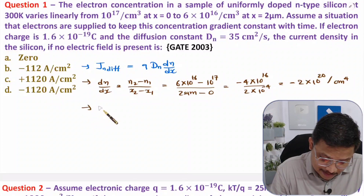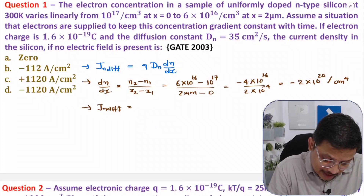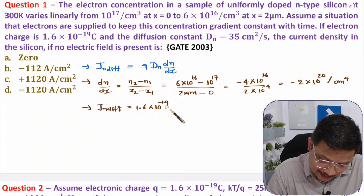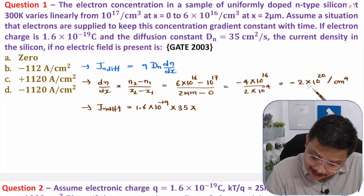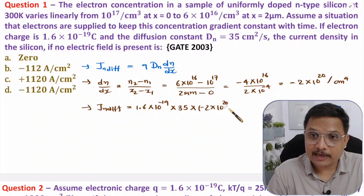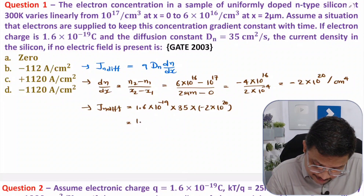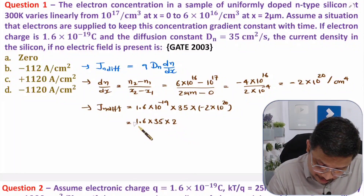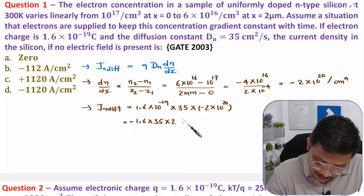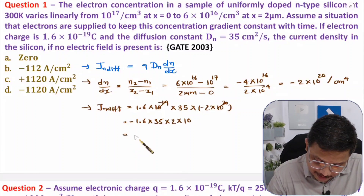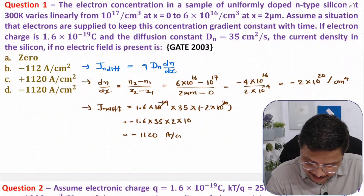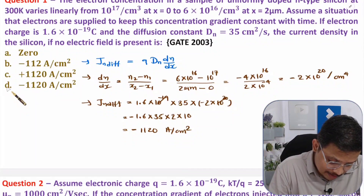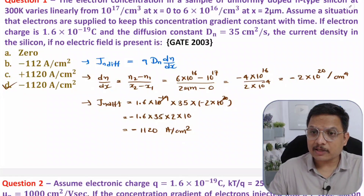Now substituting into the diffusion current formula: J_n(diffusion) = 1.6×10^-19 × 35 × (-2×10^20). Calculating: 1.6 × 35 × 2 = 112, and the powers of ten combine. The negatives cancel and the answer is 1120 ampere per centimeter square. So the correct option is option D. That is how we solve this type of question.